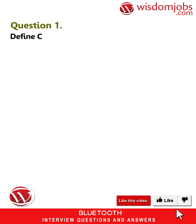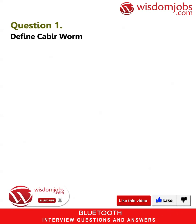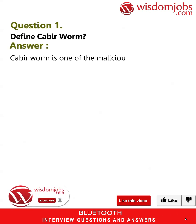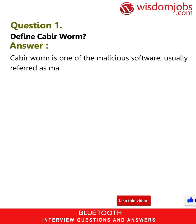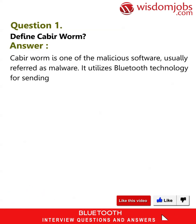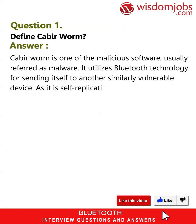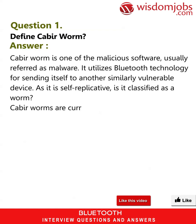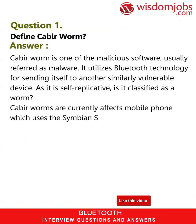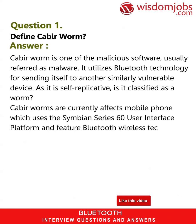Question 1: Define Cabir worm. Answer: Cabir worm is one of the malicious software, usually referred to as malware. It utilizes Bluetooth technology for sending itself to another similarly vulnerable device. As it is self-replicative, it is classified as a worm. Cabir worms currently affect mobile phones which use the Symbian Series 60 user interface platform and feature Bluetooth wireless technology.